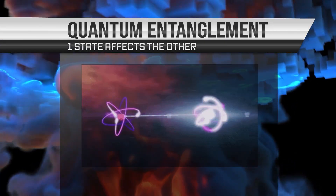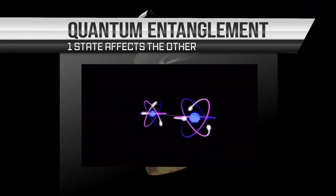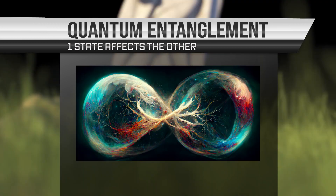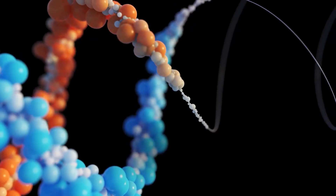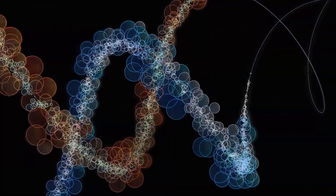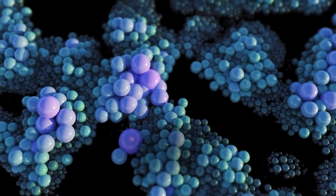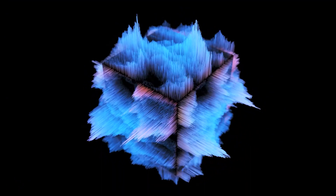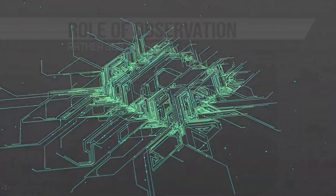Quantum entanglement is a phenomenon in which two quantum objects become linked in such a way that the state of one object can affect the state of the other, even if they are separated by large distances. This has been demonstrated in experiments where the state of one particle was changed and the other particle was found to be in a correlated state, even though they were separated by large distances.